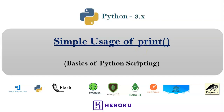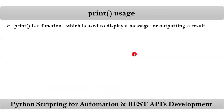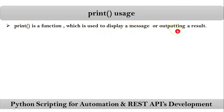Here I will be talking about simple uses of print. Print is a function — if anything is ending with parenthesis you can call that a function. The print function is used to display a message or output a result, so simply to display a message, string, text, or a result.